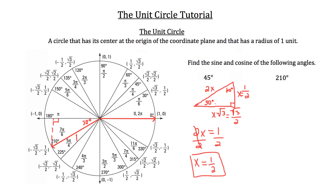The short side — across from the 30-degree angle — has a value of 1 half, but it lies below the x-axis, so on our graph it's negative 1 half. The longer leg across from the 60-degree angle has a value of root 3 over 2, but it goes to the left on the x-axis, so it's negative root 3 over 2. That gives us the x-coordinate of negative root 3 over 2 and the y-coordinate of negative 1 half.